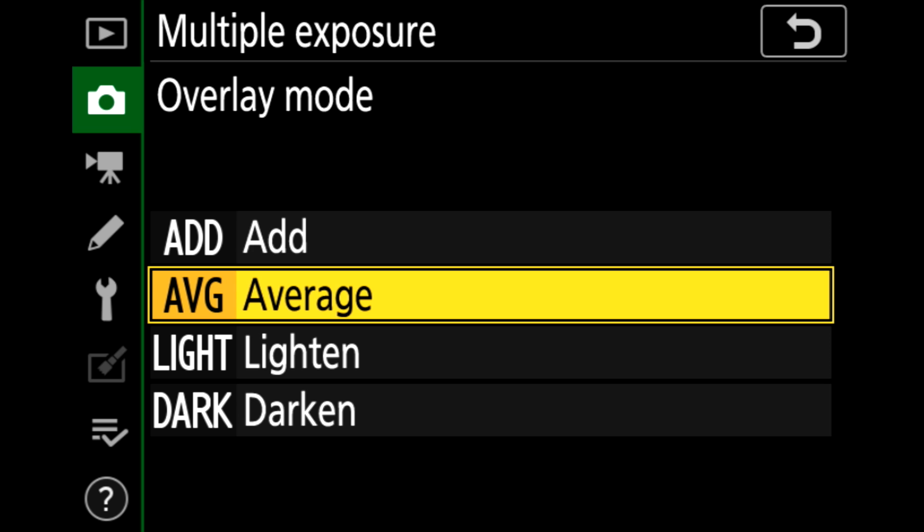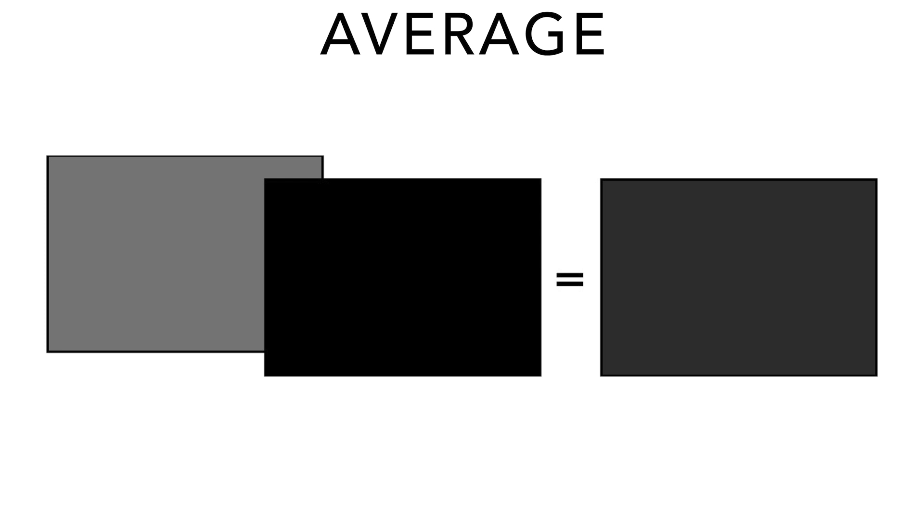Now we look at the average method of blending, and this is just as it sounds. If one pixel in that first exposure is gray and the same pixel in the second exposure is black, those are going to average out to a darker gray because we're averaging those two values. If each pixel is the same shade of gray, that's going to average out to the same shade of gray. And when you're using the average exposure blending method, you can expose normally or you can intentionally over or underexpose a photo depending on the type of effect that you want to get.